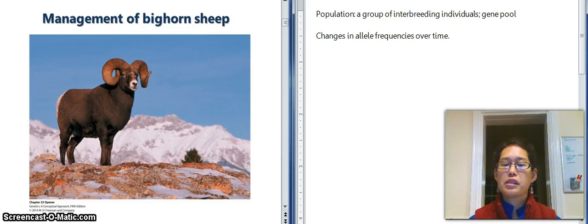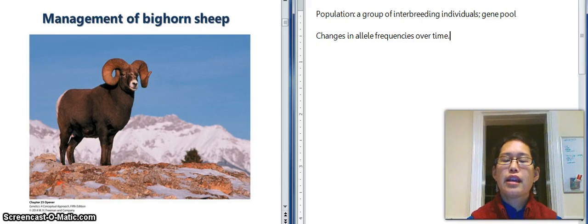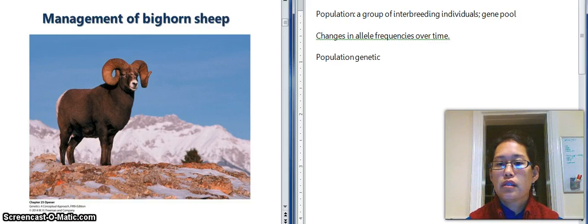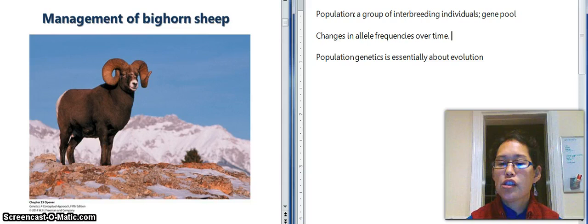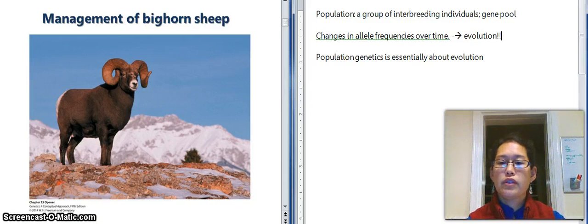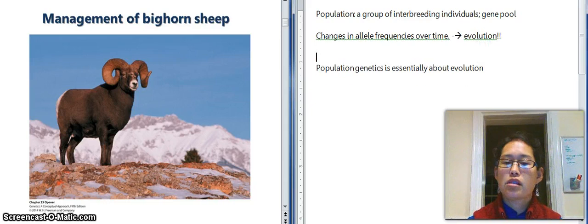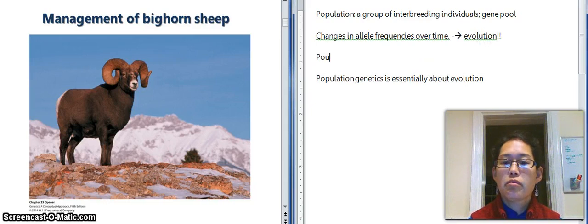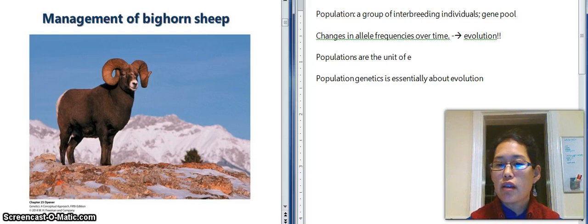And that's what population genetics looks at. It is focused especially on changes in allele frequencies over time. So what this means is that population genetics is essentially about evolution. Because changes in allele frequency over time, that equals evolution.